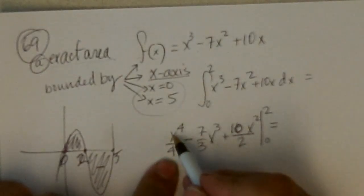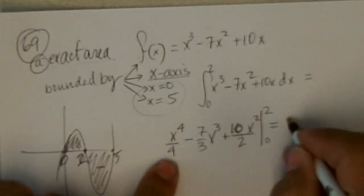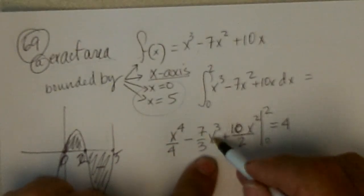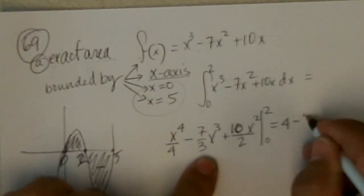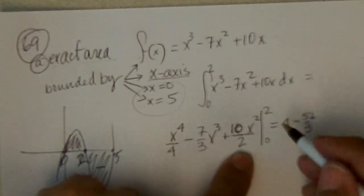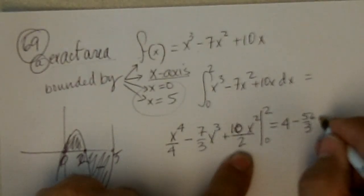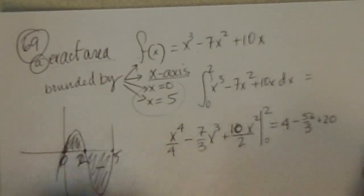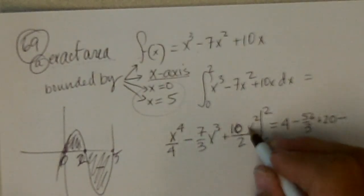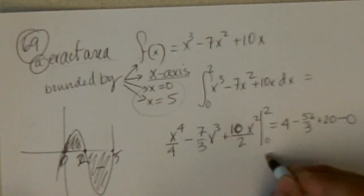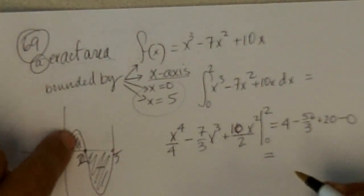Now if I put 2 in here, I get 16 divided by 4, which is 4. If I put 2 in here, I get 8 times 7 is 56 over 3. Now that's 5 times 2 squared is 20. That's putting in the 2 and from that, I've got to subtract putting in 0. And 0 makes all that be 0.